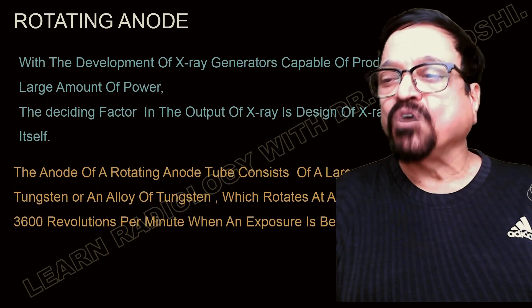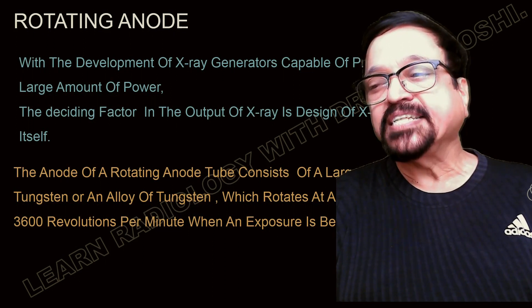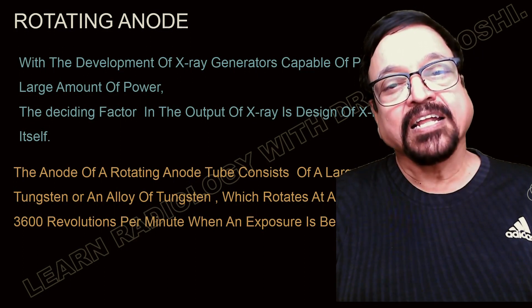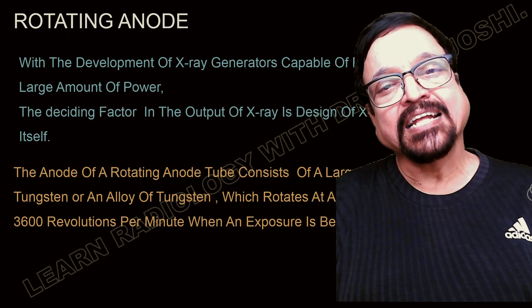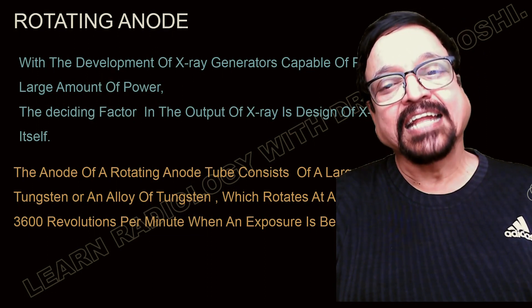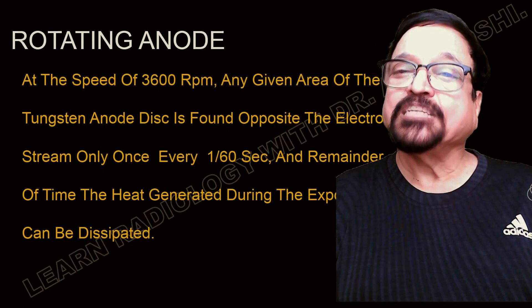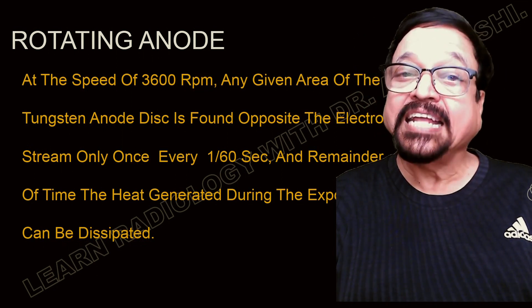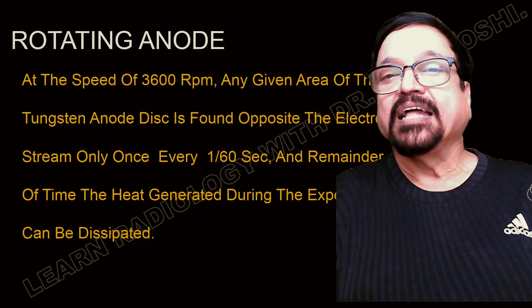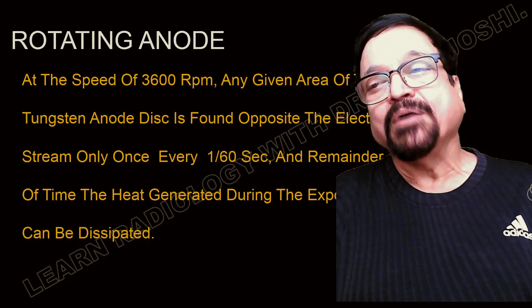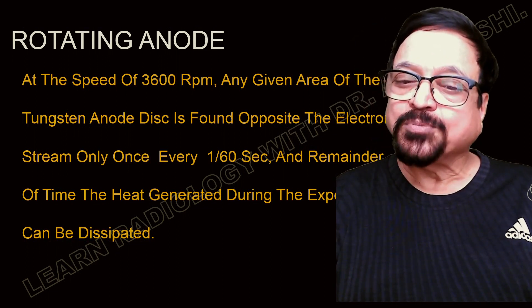The anode of a rotating anode tube consists of a large disc of tungsten or a tungsten alloy, which rotates at a speed of about 3600 revolutions per minute when the exposure is being made. Because the anode is rotating, the electrons being accelerated and hitting the anode will be hitting a different surface each time. Since they are hitting different surfaces, heat dissipation will be faster and large exposures are possible. At 3600 RPM, the electron stream hits a given spot only once every 1/60th of a second, so the remainder of the heat generated during the exposure can be dissipated.